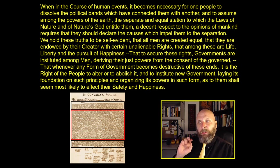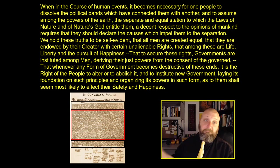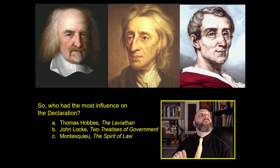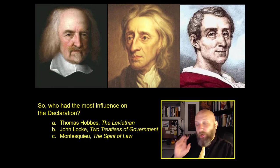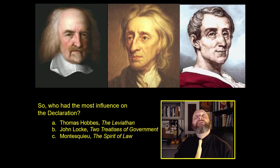'We hold these truths to be self-evident, that all men are created equal, that they are endowed by their creator with certain unalienable rights, that among these are life, liberty, and the pursuit of happiness. That to secure these rights, governments are instituted among men, deriving their just powers from the consent of the governed. That whenever any form of government becomes destructive of these ends, it is the right of that people to alter or abolish it.' So here we have God giving you natural rights, and it is the purpose of government to defend them. Jefferson says 'pursuit of happiness,' but we've heard those words before — from one of our political philosophers. Who had the most influence on the Declaration's introduction? Hobbes, Locke, or Montesquieu? Write your answer in your notes.